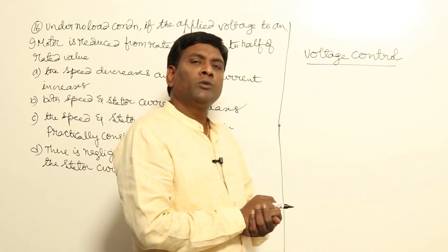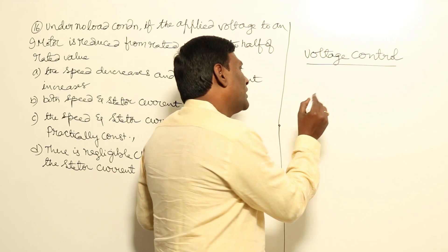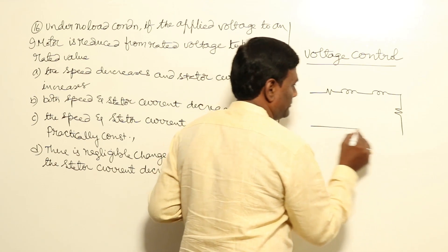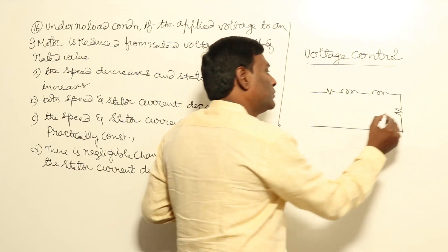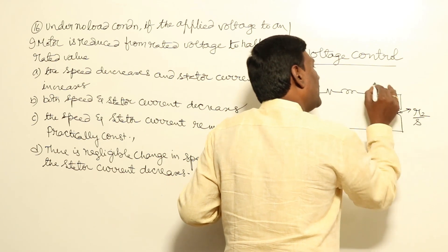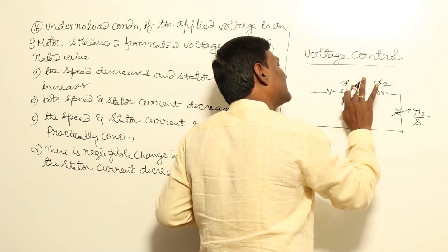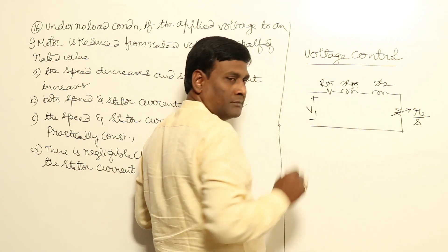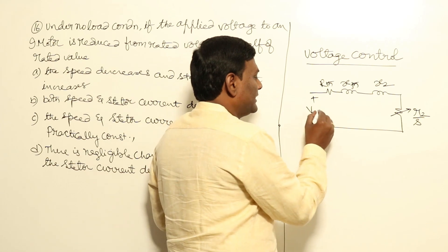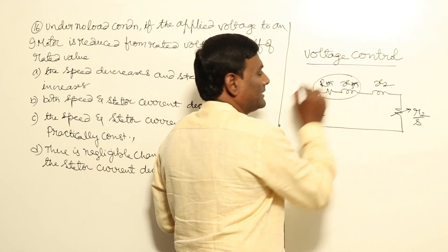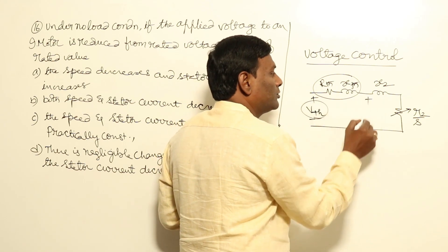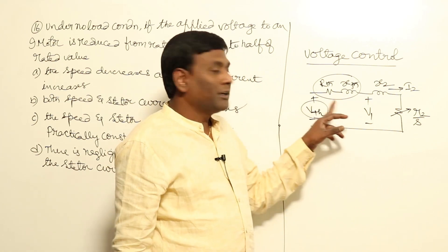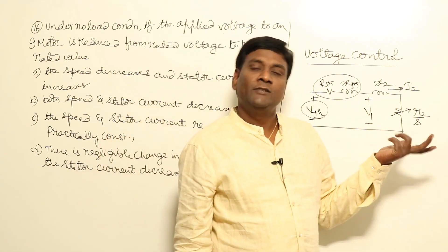In voltage control, input voltage we are going to change. Our equivalent circuit has RTH, XTH, X2, and R2 by S. We neglected RTH and XTH, so it will become V1 here and this will become I2. RTH and XTH are neglected because our focus is the rotor.